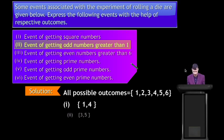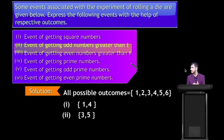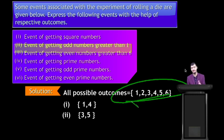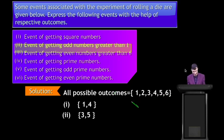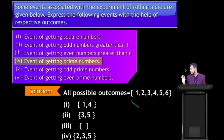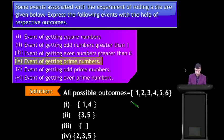Third: event of getting odd numbers greater than 6 — it is not possible, so the answer is an empty set — no event. Fourth: event of getting prime numbers. Remember: 1 is not a prime number. Prime numbers among 1–6 are 2, 3 and 5 — so there are 3 prime numbers.